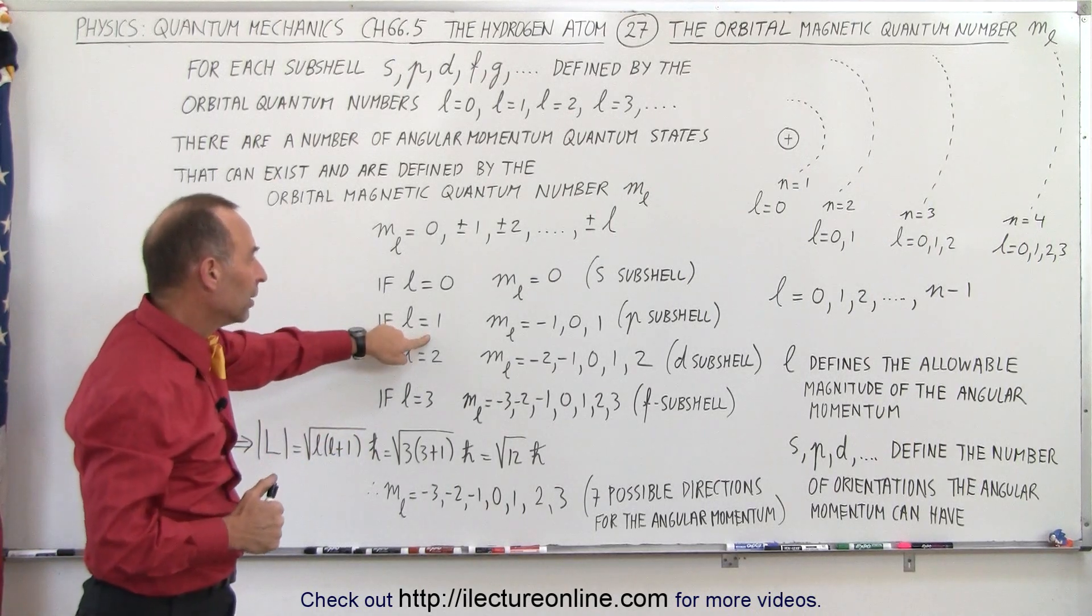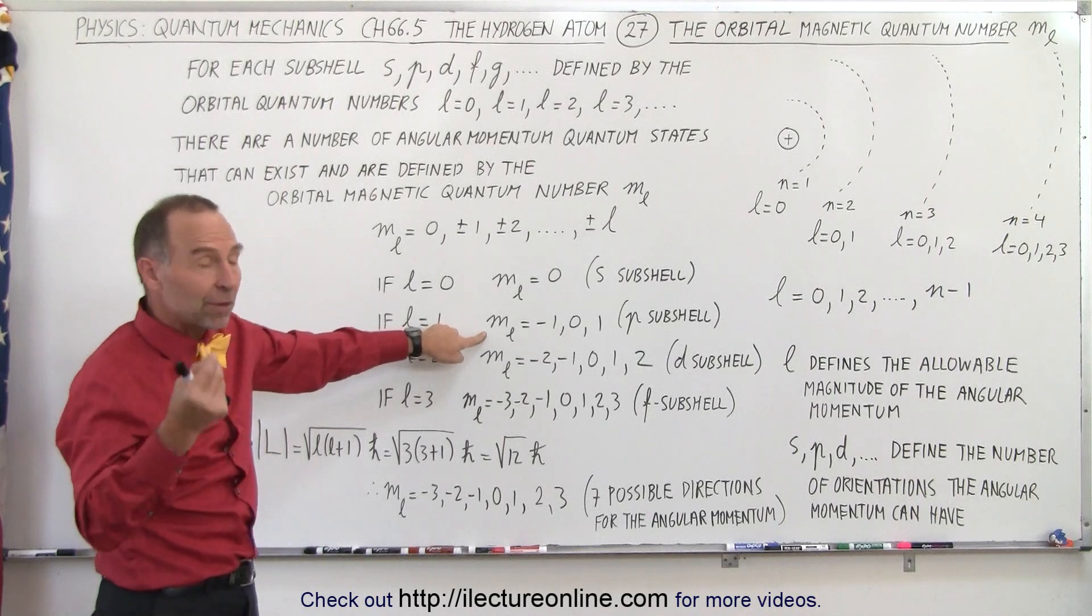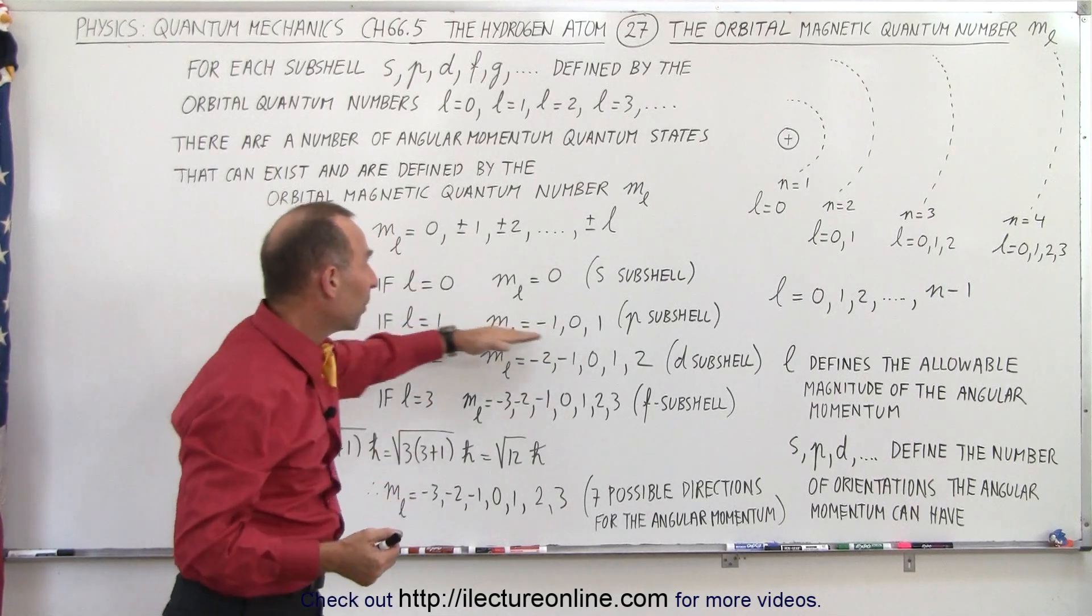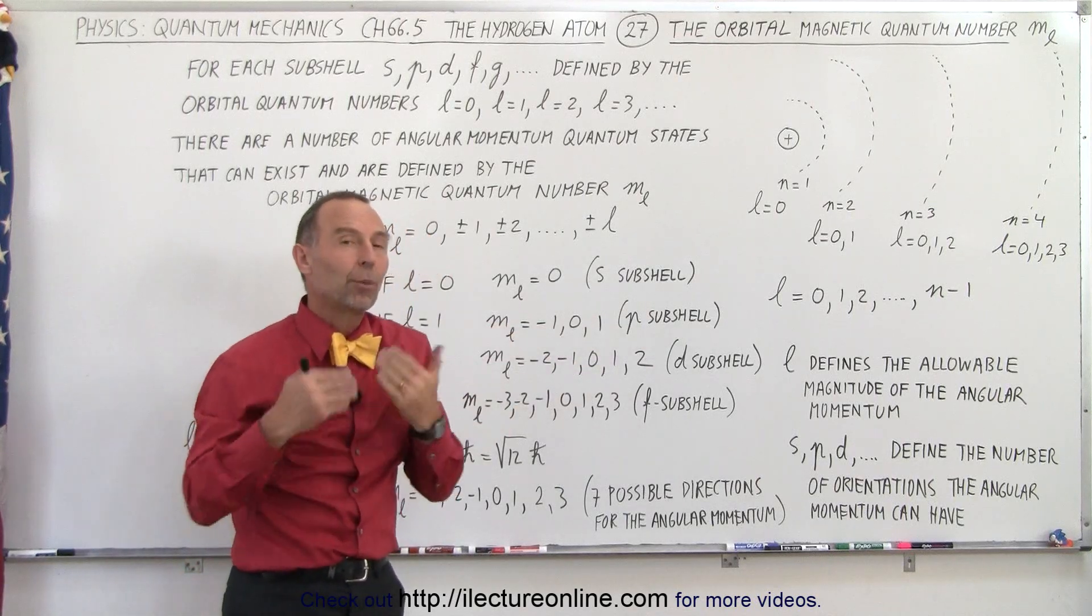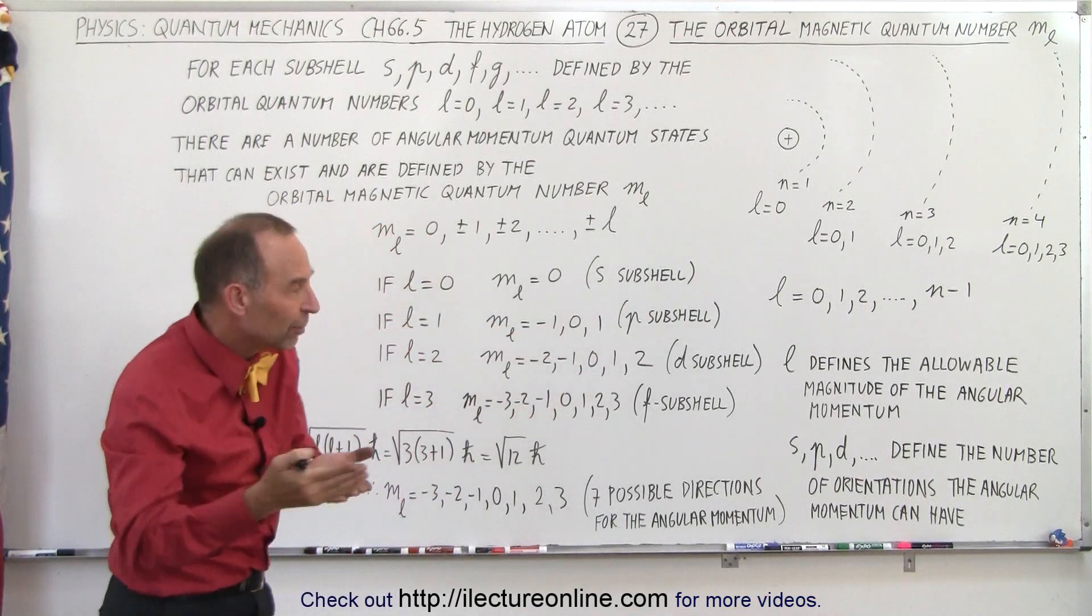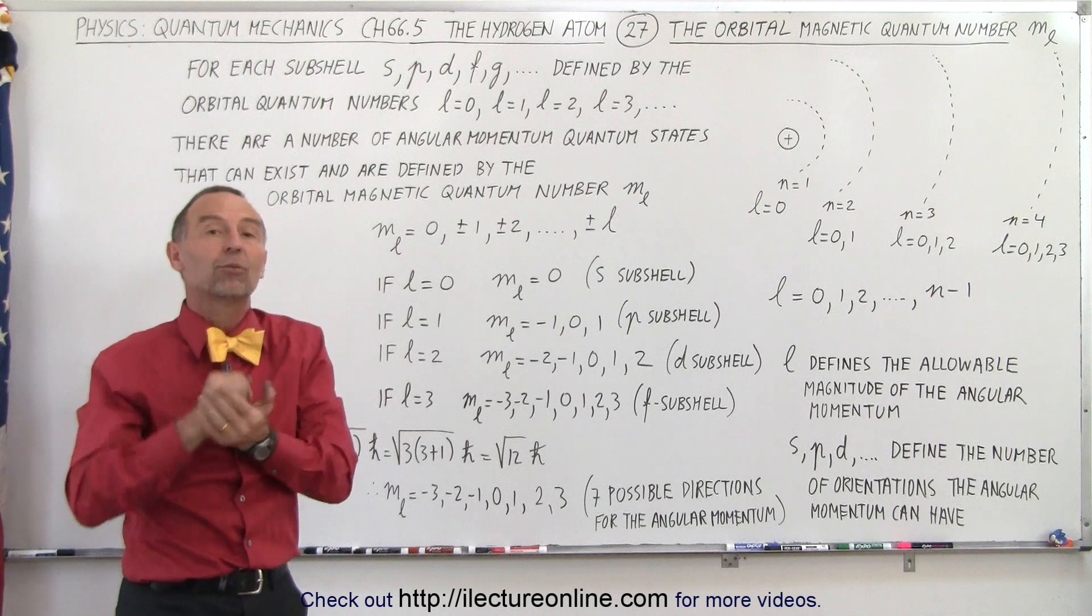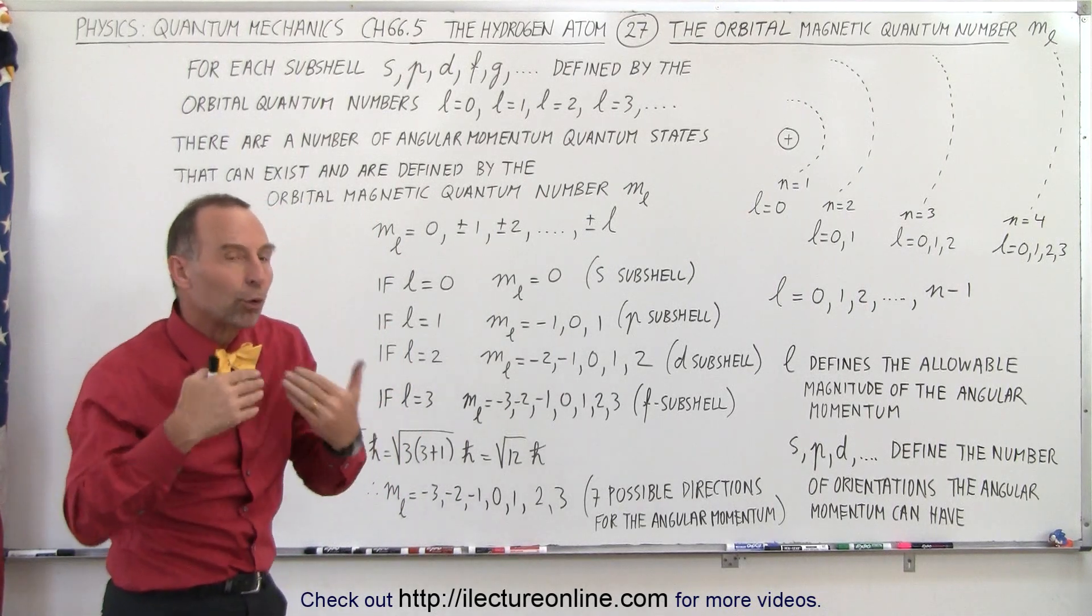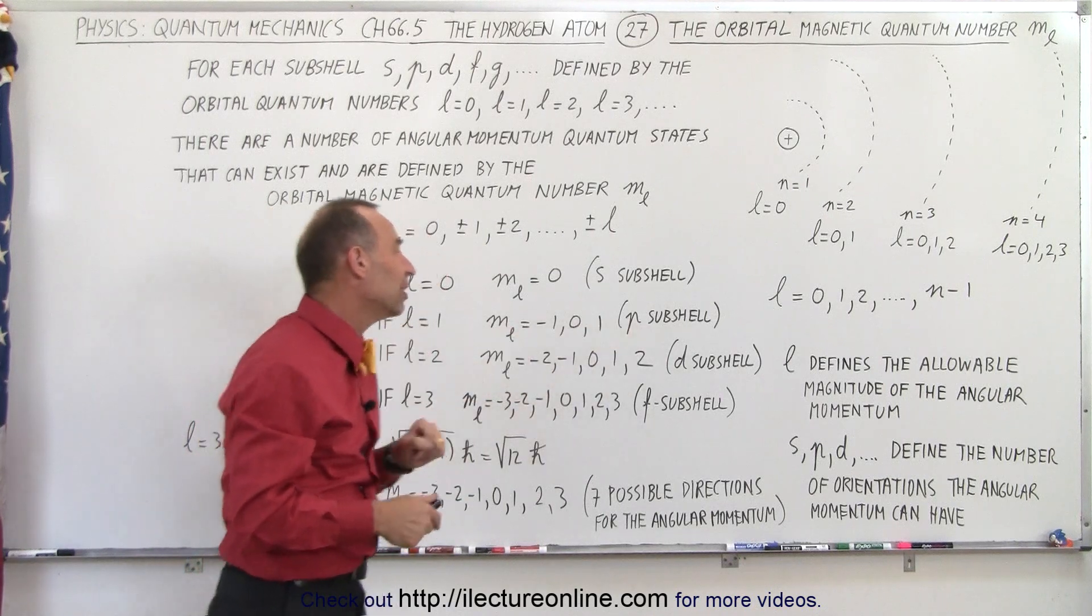But if L is equal to 1, then M sub L can take on three values: minus 1, 0, and plus 1. All these represent the P subshell, but what that means is that the angular momentum can have three different directions. So there's basically three different what we call orbitals that can exist in the P subshell, and we'll talk more about that in a later video.